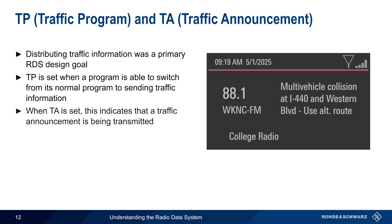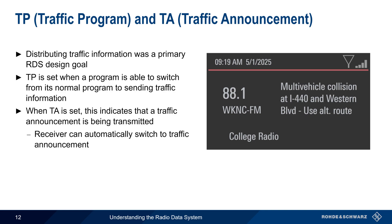The TA, or Traffic Announcement bit, is used to signal to a receiver that a traffic announcement is being transmitted at that time. The receiver can then automatically switch to playing the traffic announcement, as well as take action such as pausing other programming, increasing volume, etc.